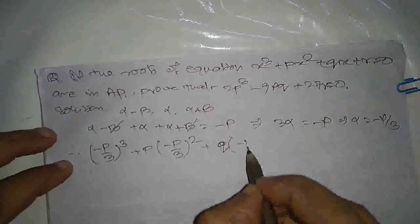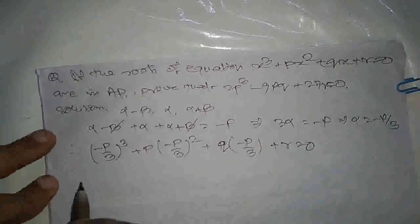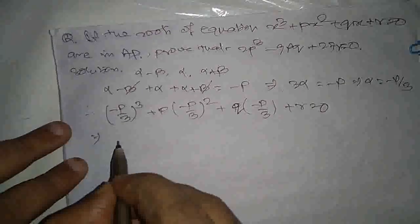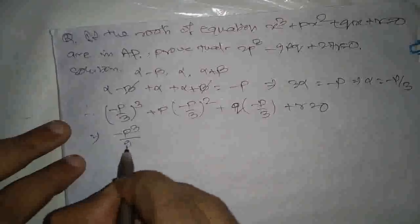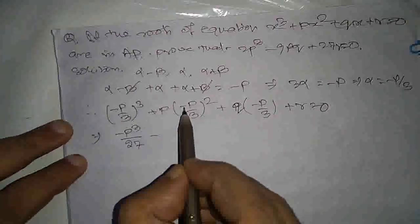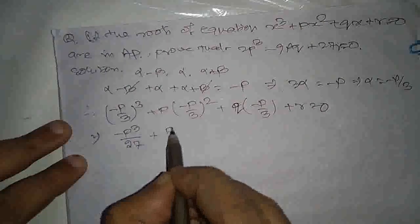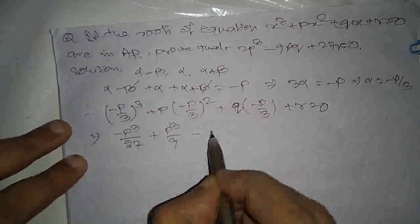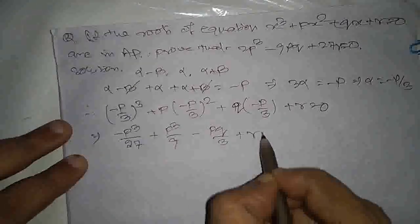plus r equal to 0. This implies minus p³ by 27 plus p³ by 9 minus pq by 3 plus r equal to 0.